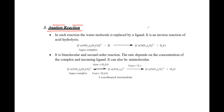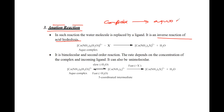NHN reaction is just the inverse reaction of acid hydrolysis. In acid hydrolysis, a complex was being converted into an aquo complex. So in this case, there will be an aquo complex that will be converted into something else.